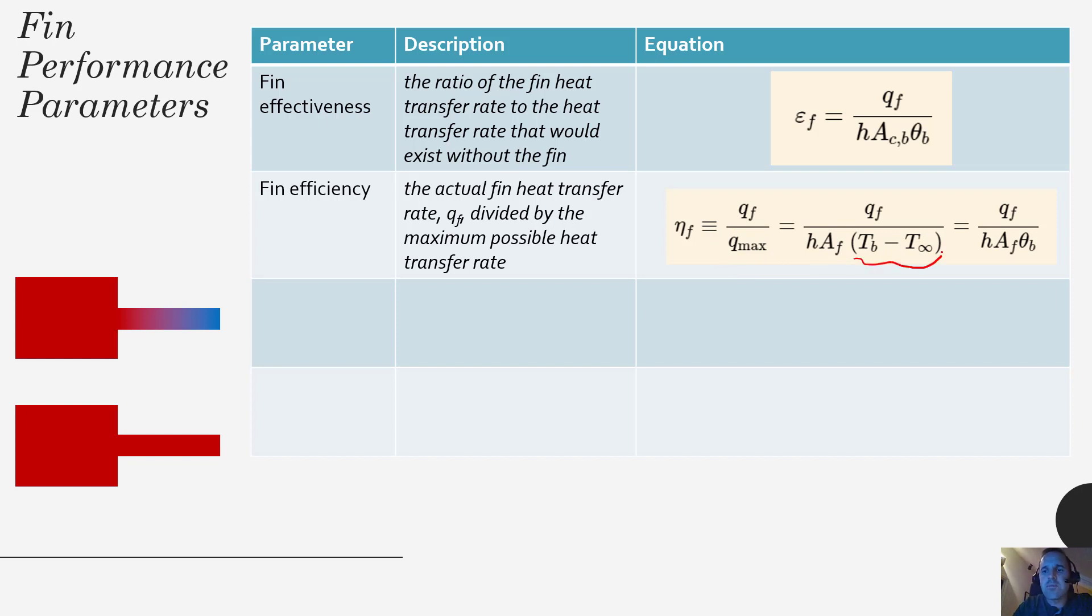And what Q max says is if our entire fin were at the same temperature as the base, then you would have this maximum driving force all the way through the length of the fin. So because you'd have that high delta T from the base all the way to the tip, that would be the best you could possibly do for a given H. So this fin efficiency is how well are you doing versus how well you could possibly do. So to achieve something like this you could have a solid that has really high thermal conductivity. So you'd see heat would propagate through there very quickly, giving you something fairly uniform.